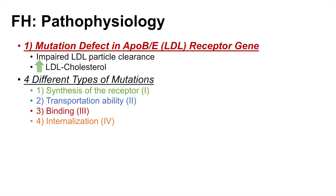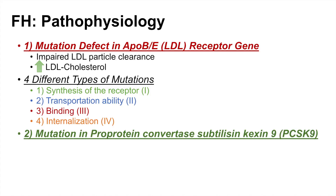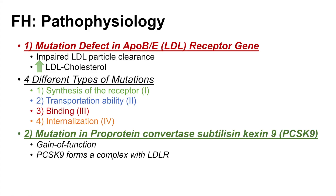The mutation in the LDL receptor gene is the most common cause of familial hypercholesterolemia, but there are other genes that can be affected. A mutation in proprotein convertase subtilicin kexin 9, or PCSK9, is a gain-of-function mutation. PCSK9 forms a complex with the LDL receptor and down-regulates it. A gain-of-function mutation in PCSK9 increases its activity, leading to increased binding to and further down-regulation of the LDL receptor, raising LDL levels.